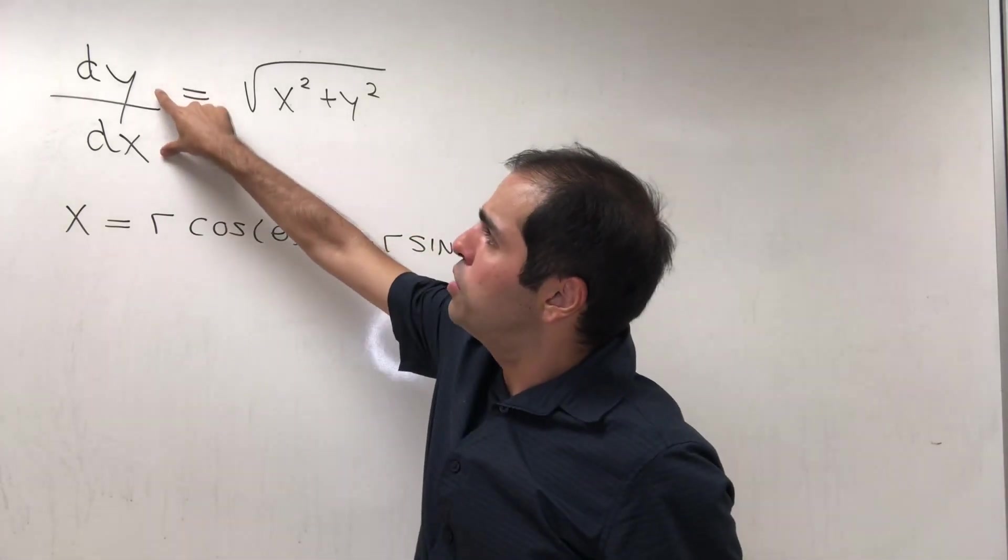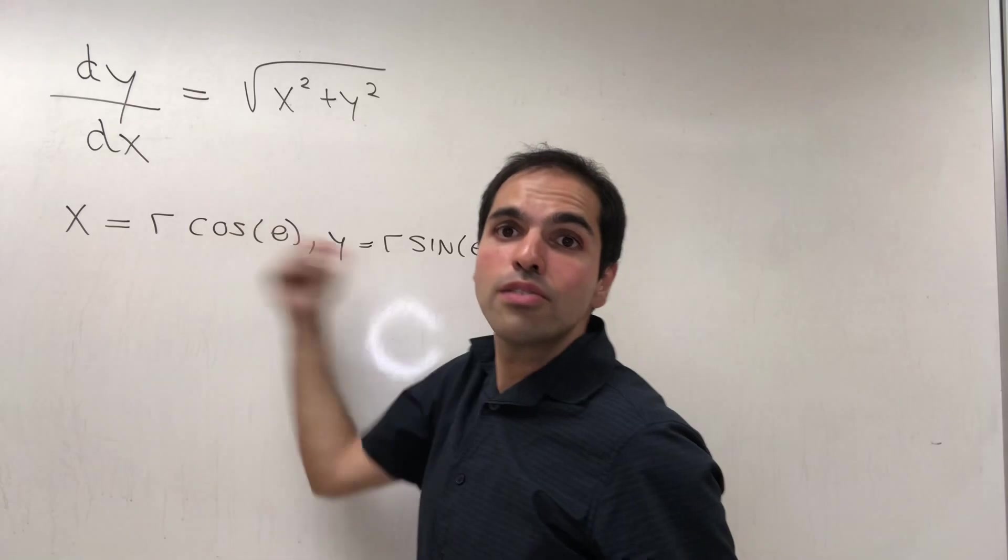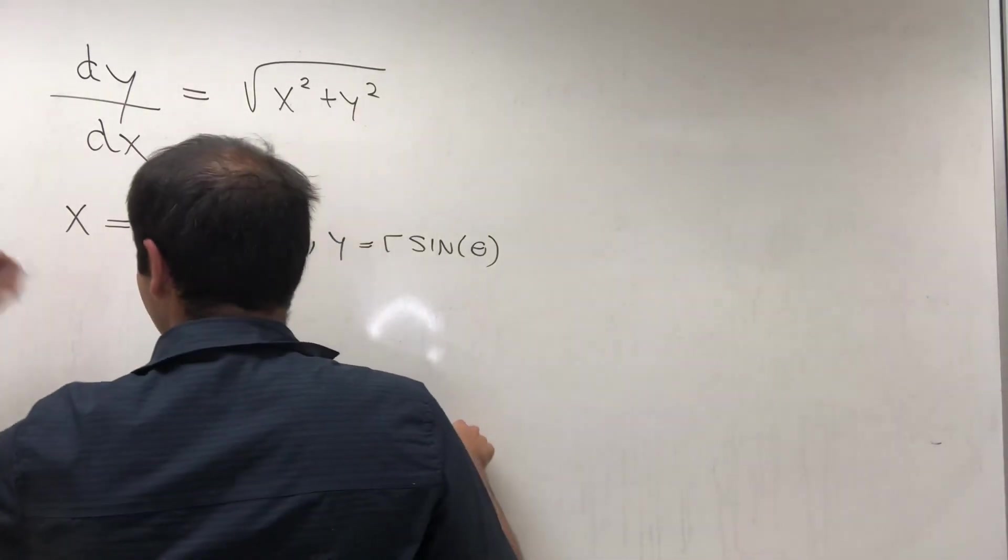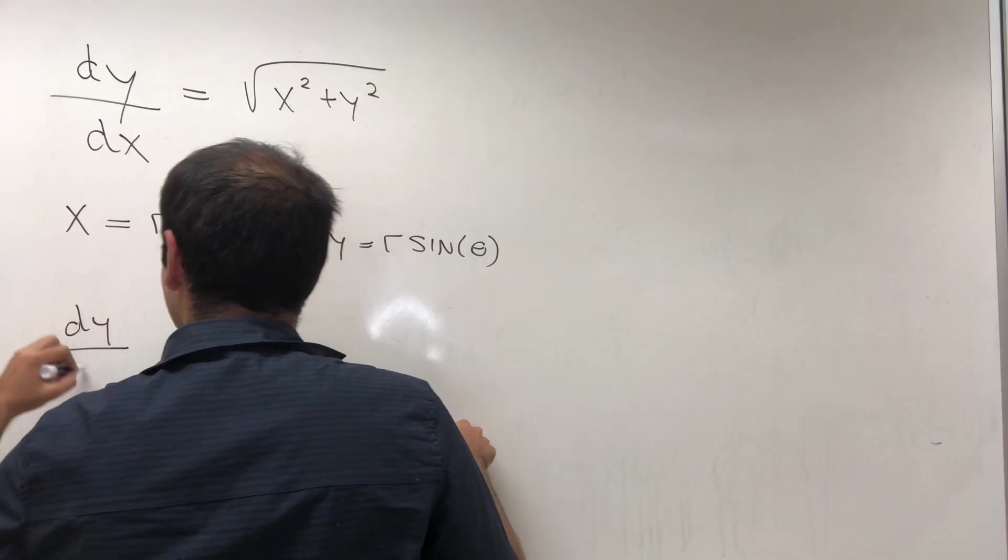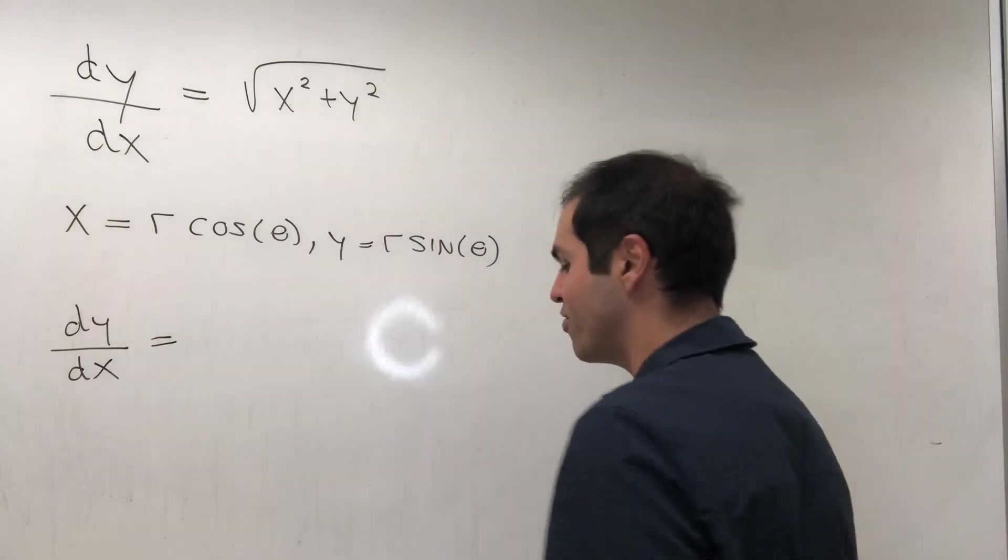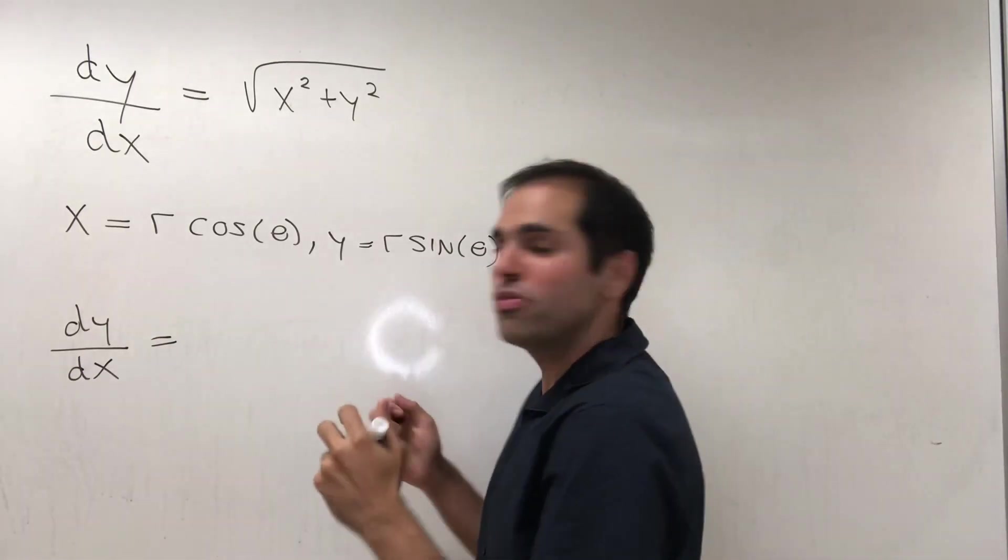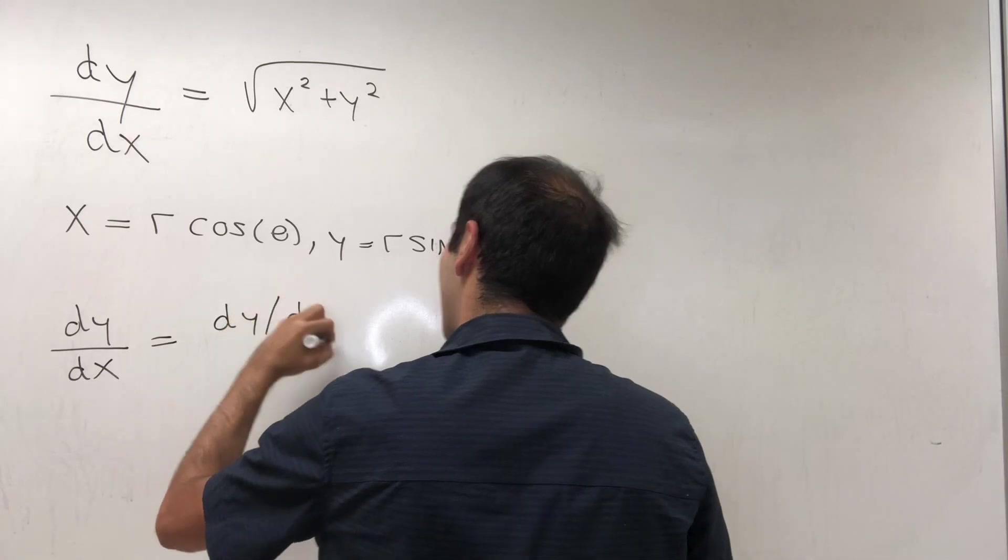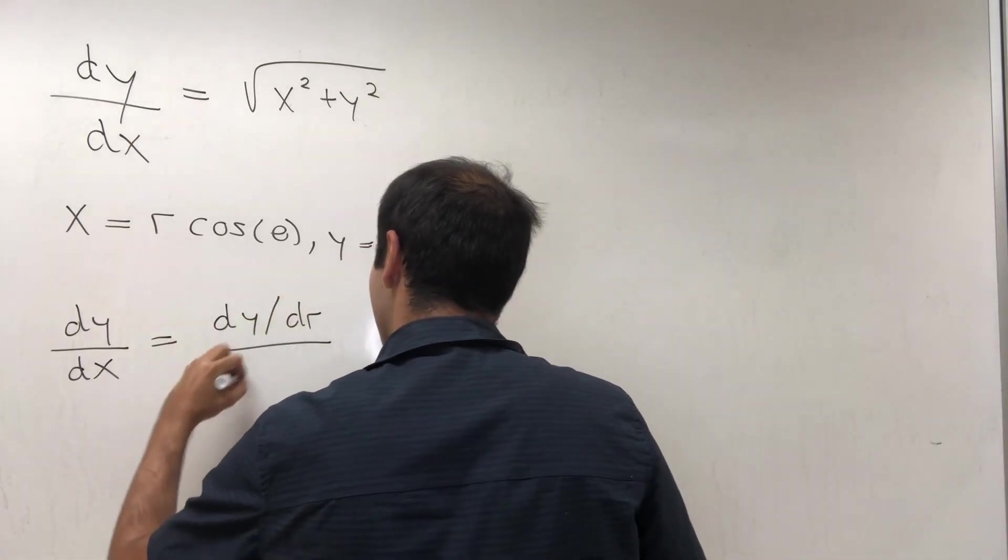The idea is to write dy and dx in terms of r and θ. More precisely, dy/dx, by using the chain rule, we get dy/dr over dx/dr.